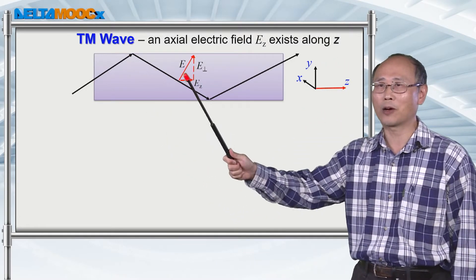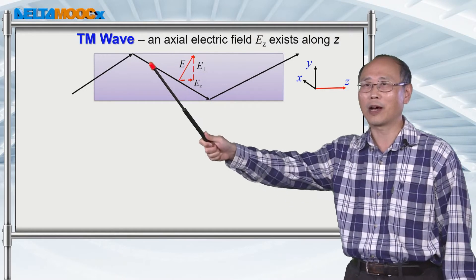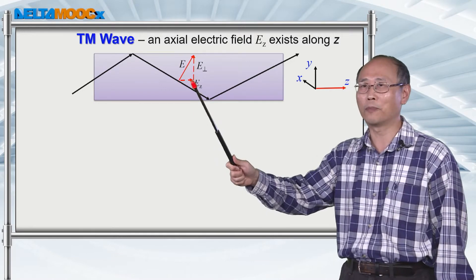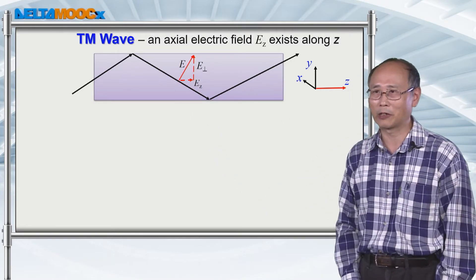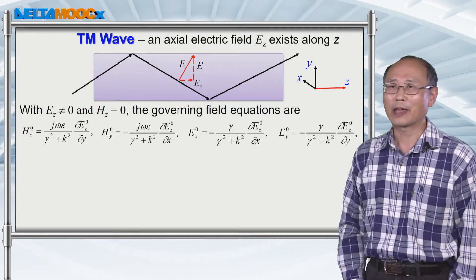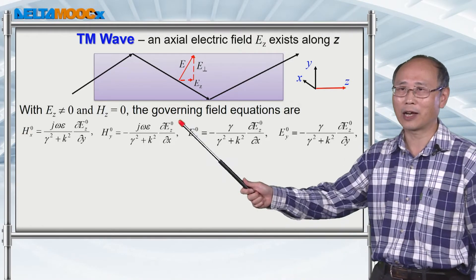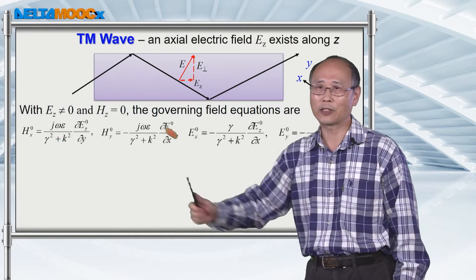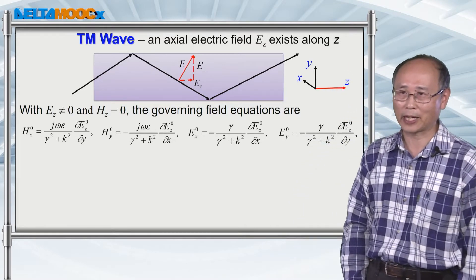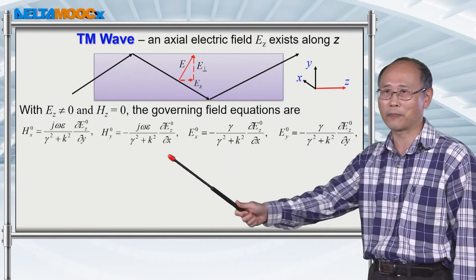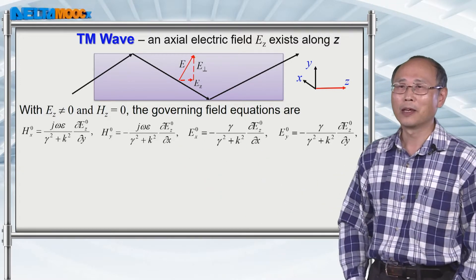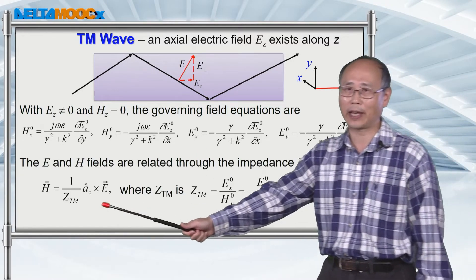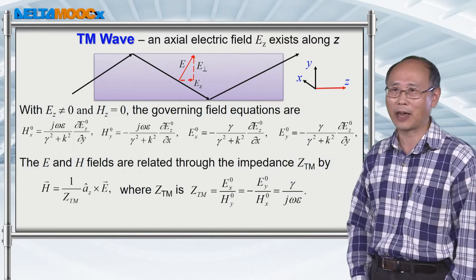Therefore, a TM wave with the electric field perpendicular to, for example, this downward propagation direction, you can derive a field component along the propagation direction along the z-direction. And also from the last session, given the z-component of electric field, you can derive the expressions for the transverse magnetic field and also transverse electric field given by these four expressions. Once you have the transverse electric field and magnetic field, then you can calculate the impedance of this TM wave.